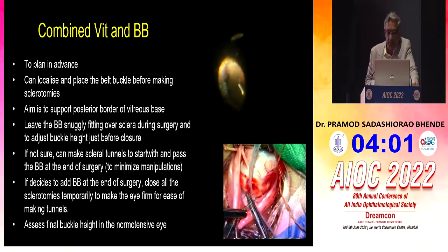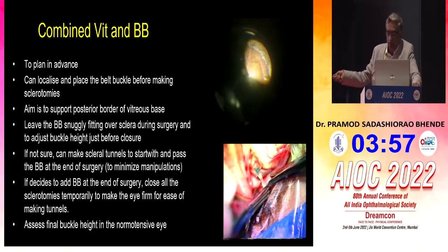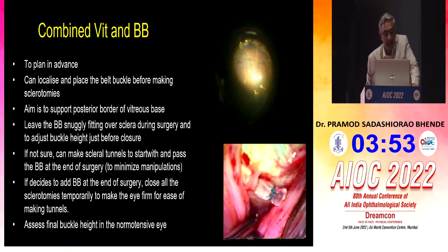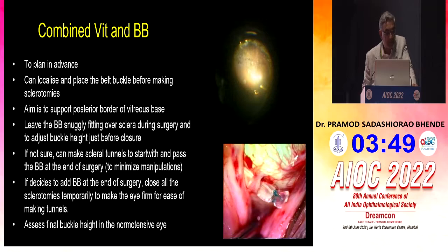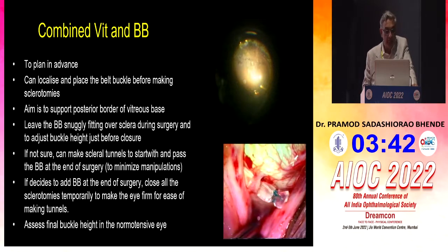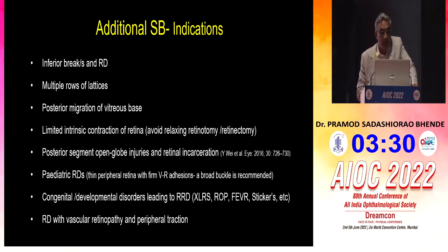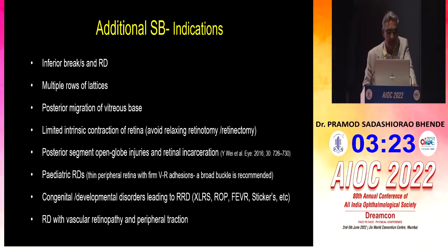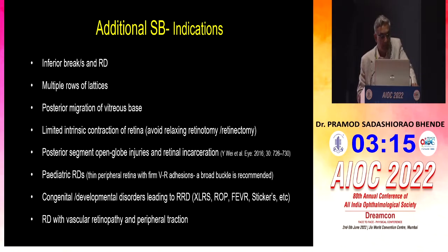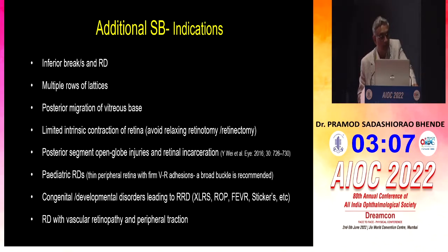If you are not sure, you can make the sclerotomy to start with and pass the belt buckle at the end to minimize manipulation. If you decide to add a buckle at the end of surgery, close all sclerotomies temporarily to make the eye firm for easy tunneling or passing sutures. Once you add your buckle, assess the final buckle height; normally I bring the pressure down. I prefer adding a buckle for inferior breaks where I suspect minimal contraction, multiple lattice areas where vitreous cannot be fully separated, posterior migration of vitreous base, limited intrinsic retinal contraction, open globe injuries, and retinal incarceration.